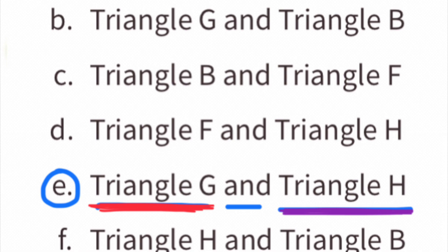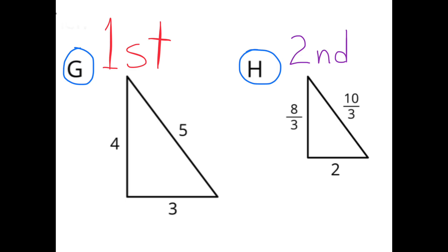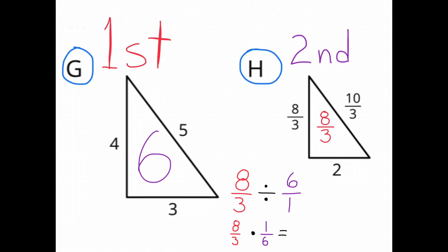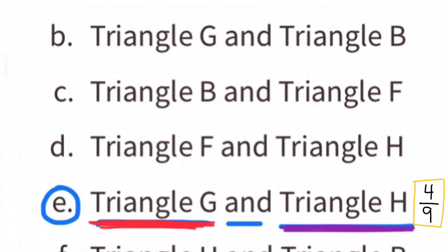Part E: triangle G and triangle H. On the left is triangle G, the first triangle mentioned, and on the right is triangle H, the second triangle mentioned. The area for triangle H is 8 thirds square units and the area for triangle G is 6 square units. We need to determine how much larger triangle H is compared to triangle G. Triangle H is actually smaller. 8 thirds divided by 6 is the same as 8 thirds times 1 sixth, which equals 4 ninths. The area of triangle H is 4 ninths the size of the area of triangle G.